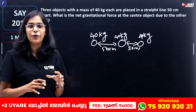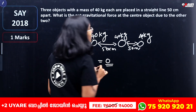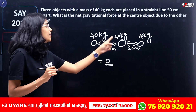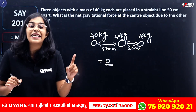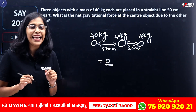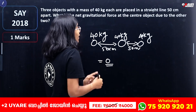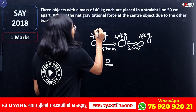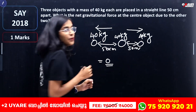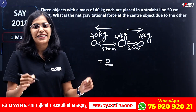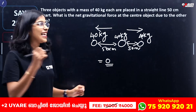There are equal forces on the center object from both 40 kg objects on either side. The masses M1 and M2 are equal, and the distance R is equal on both sides. So one object will attract the center object, and the other will attract it in the opposite direction. Equal force, opposite direction — so the net force is zero.